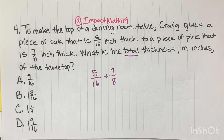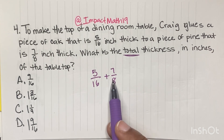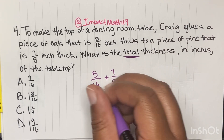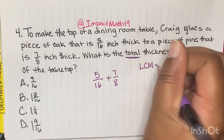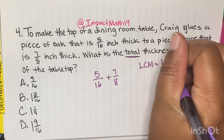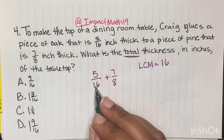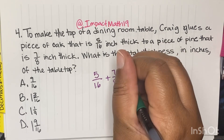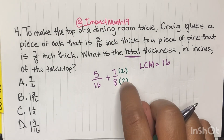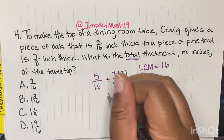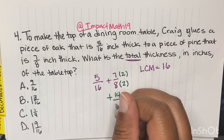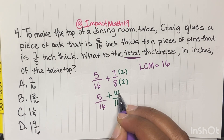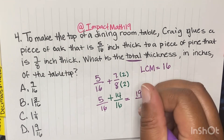Remember, when you're adding fractions, you have to have the same denominator — the same bottom number. So what do 16 and 8 go into? 16 can go into 16, and 8 can go into 16. So our LCM, least common multiple, is 16. The 5 sixteenths is already good. For 7 eighths: 8 times 2 gives us 16, and what I do to the bottom I must do to the top, so 7 times 2 gives us 14 over 16. So we have 5 sixteenths plus 14 sixteenths, and 5 plus 14 gives us 19 over 16.